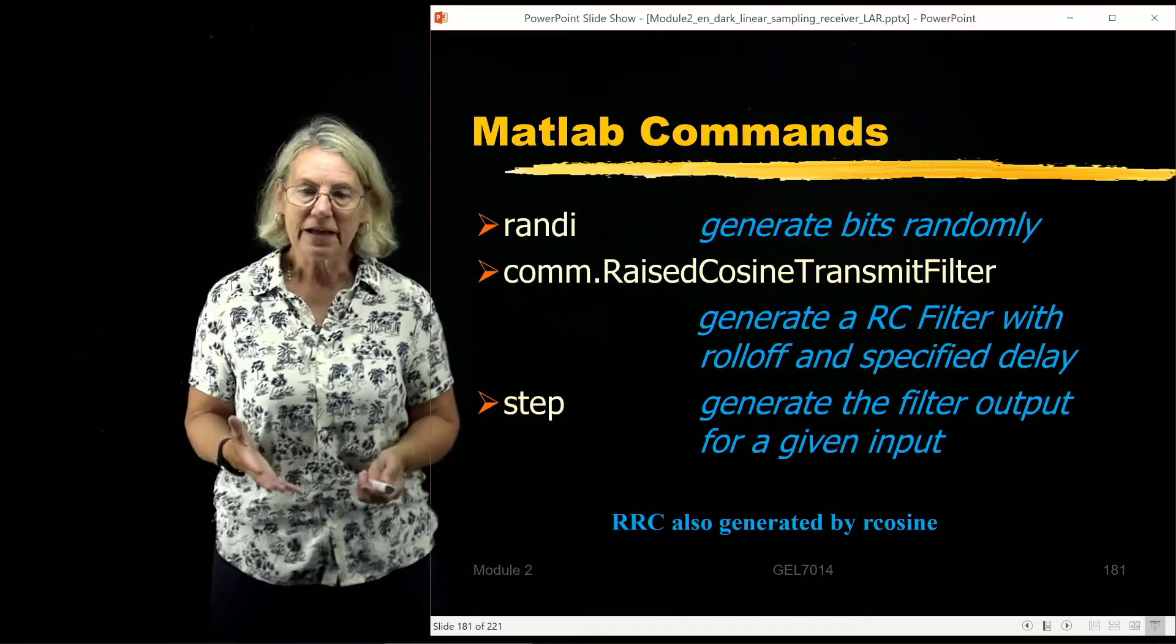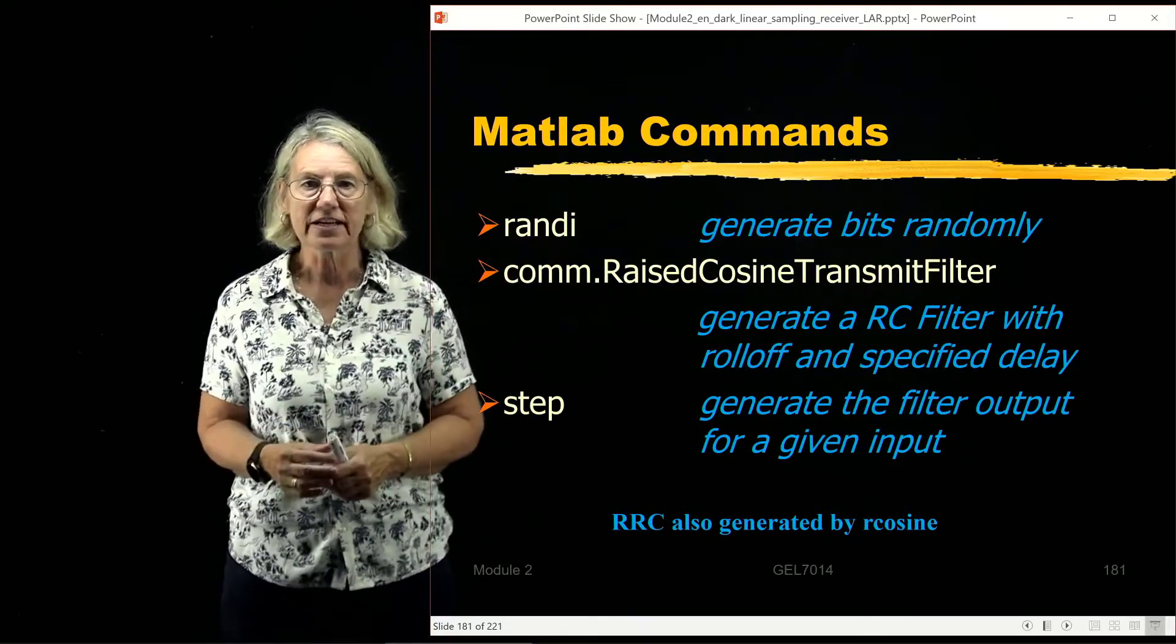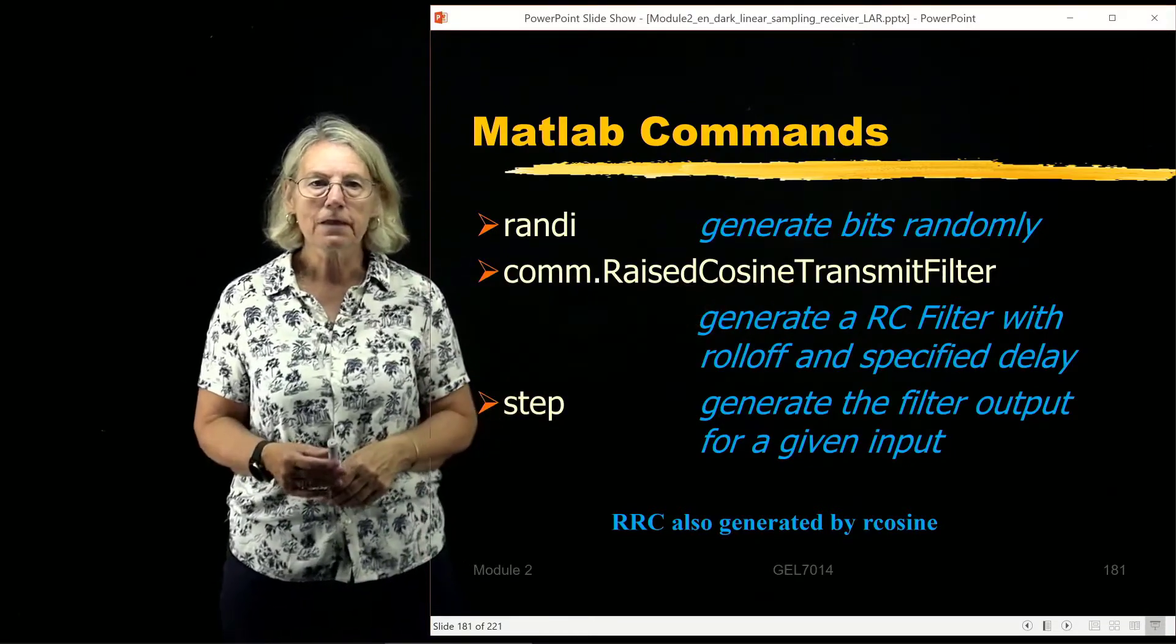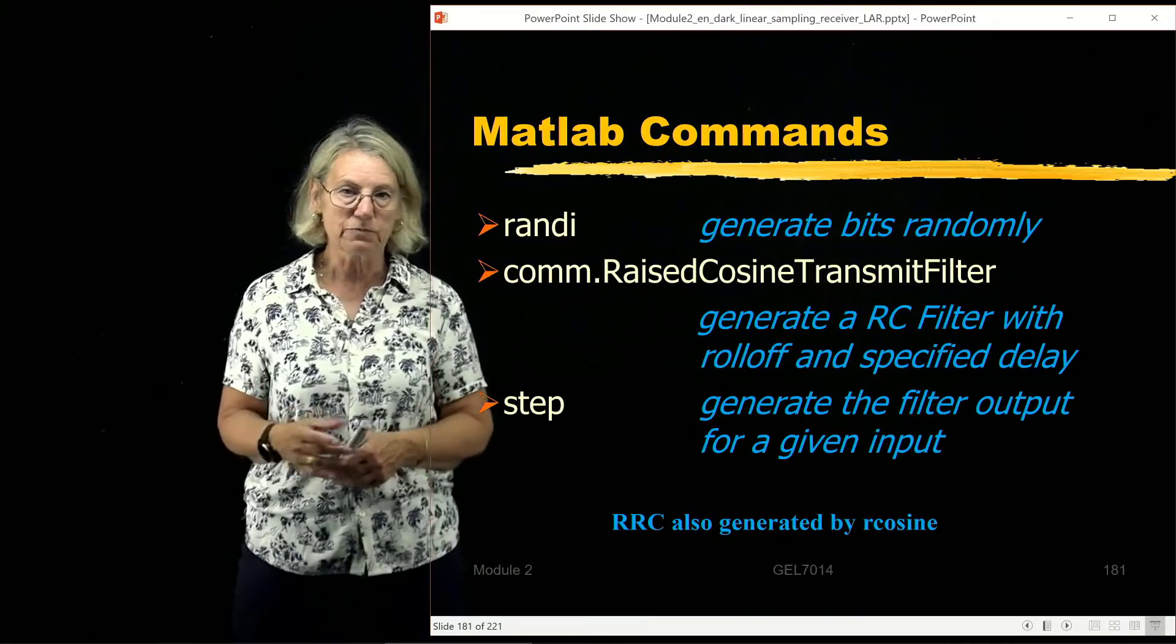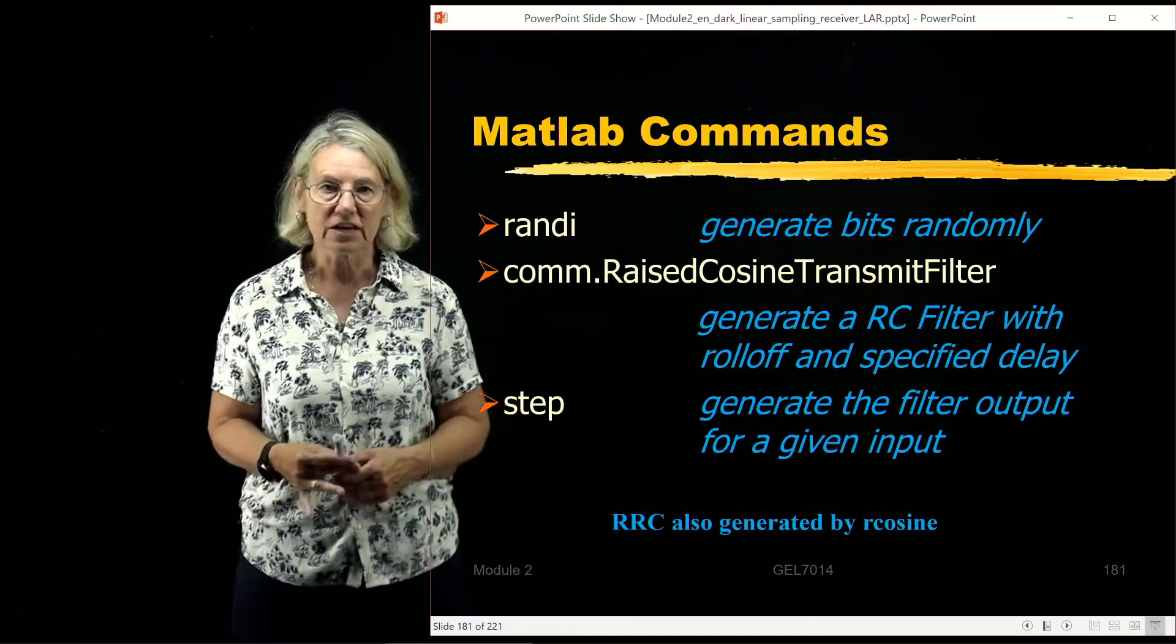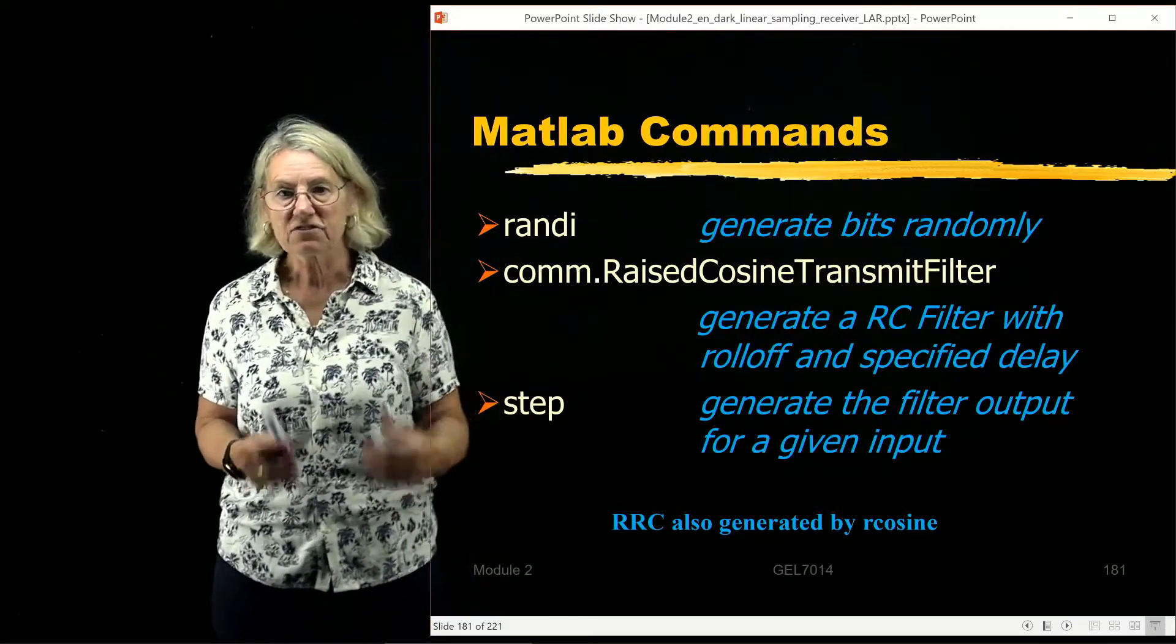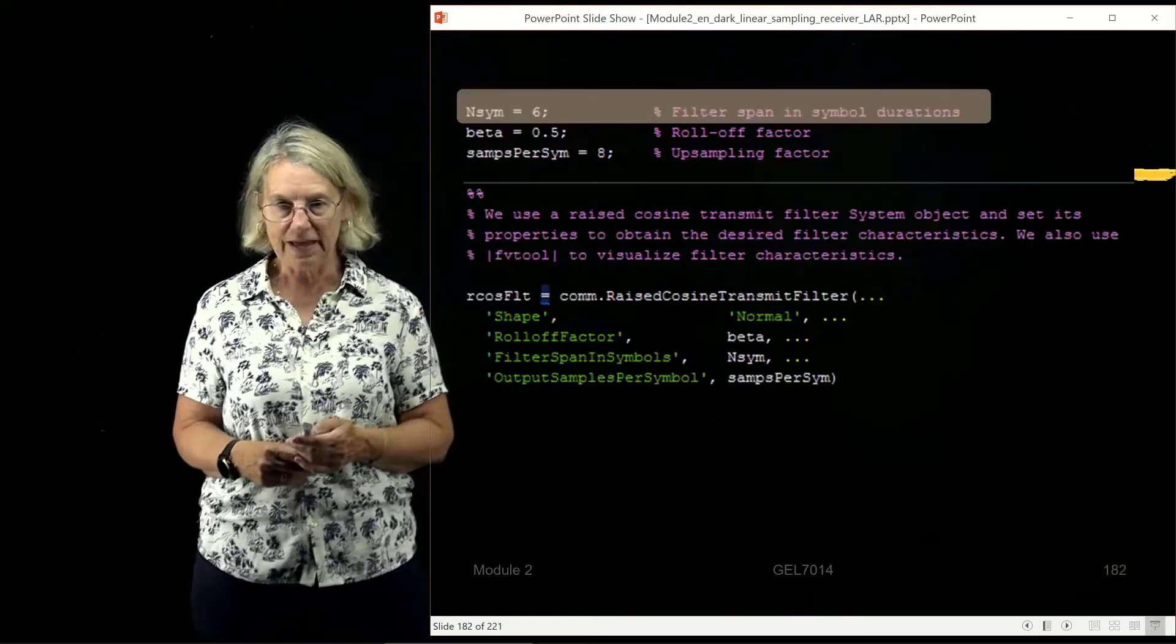So here is the script that you'll open up in this demonstration that takes you through raised-cosine filter and it shows you some of the implementation issues. There are a couple of commands that you need to know. Randi, i for integer, generates the bits randomly and then you call the comm communications raised-cosine-transmit filter and then you can specify the roll-off and the delay that you're going to be introducing. In this you can also generate a root-raised-cosine filter, not just the raised-cosine. And then the final command of step means to actually generate the filter which is specified in the first command.